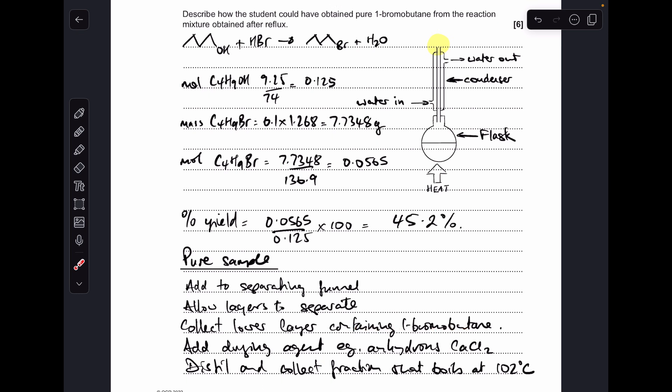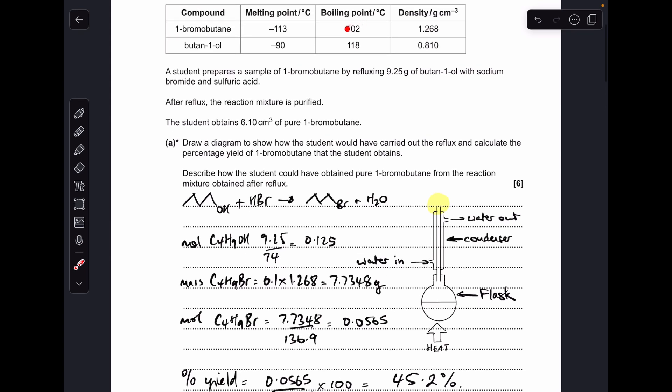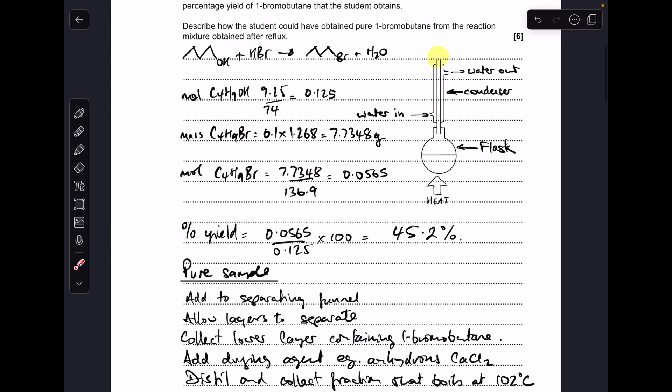They're going to add a drying agent to remove any last traces of water. The one I always mention is this one, anhydrous calcium chloride. Obviously there are others but that's the one I just tend to remember. And then once you've got rid of the water, you distill and collect the fraction that boils at the boiling point. Again, that was given in the table for the product, 102 degrees C.